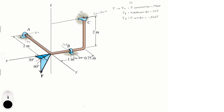The first thing I always do is sum the forces in x, y, and z, as that gives equations to guide next steps. In x: Ax + 50 + 0.4330 F = 0 (Equation 1). In y: By + Cy + 0.25 F = 0 (Equation 2). In z: Az + Bz − 0.866 F = 0 (Equation 3).